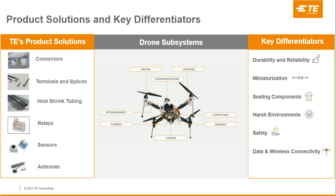We'll dive into more detail on how these products are complementary to the drone subsystem ecosystem — common subsystems like motor, lighting, communications, interconnect, camera, power, sensing, and computing. Our focus on reliability and our unmatched product portfolio range enables companies large and small to turn ideas into technology that can transform how the world works and lives.